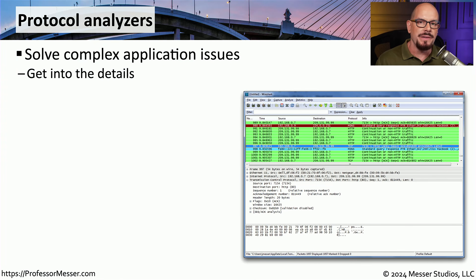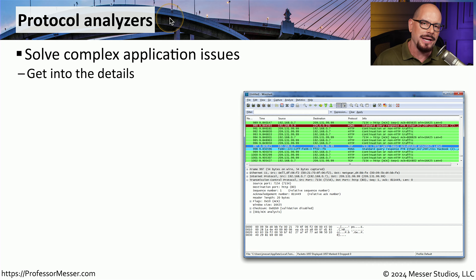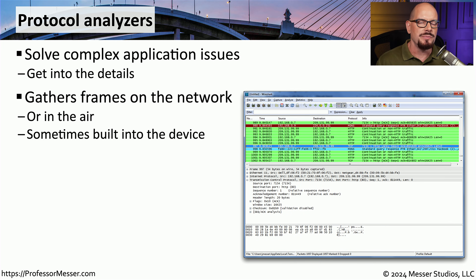Every network administrator will eventually be faced with a problem that says the network is slow. In actuality, the network probably is working just fine, but it will be the responsibility of the network administrator to determine what part of the network communication is performing poorly. One of the ways that you can find this information is with a protocol analyzer, which will capture frames on a wired or wireless network and present the results in a format that a human being can understand.